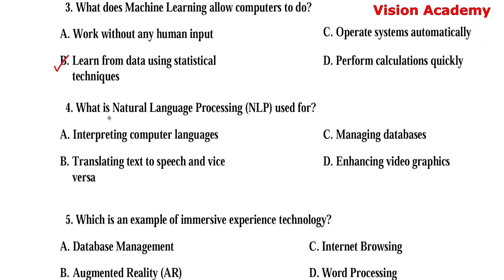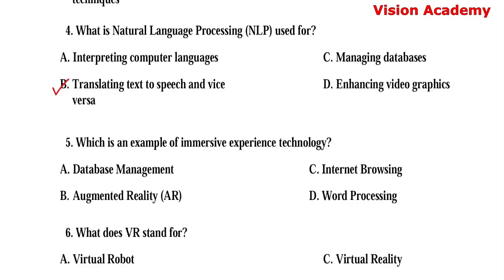Question number 4. What is natural language processing NLP used for? Option A: Interpreting computer languages. Option B: Translating text to speech and vice versa. Option C: Managing databases. Option D: Enhancing video graphics. Here, option B, translating text to speech and vice versa, is the right answer.